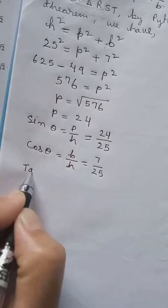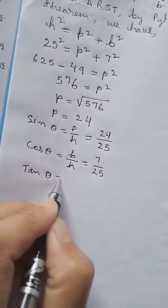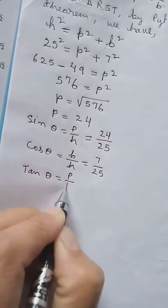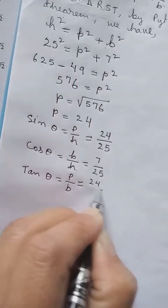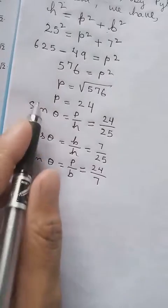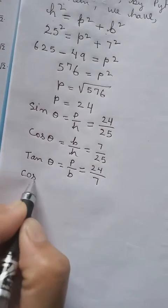Then tan θ equals P by B. So P equals 24, B equals 7. Then opposite of cos will be cosec.